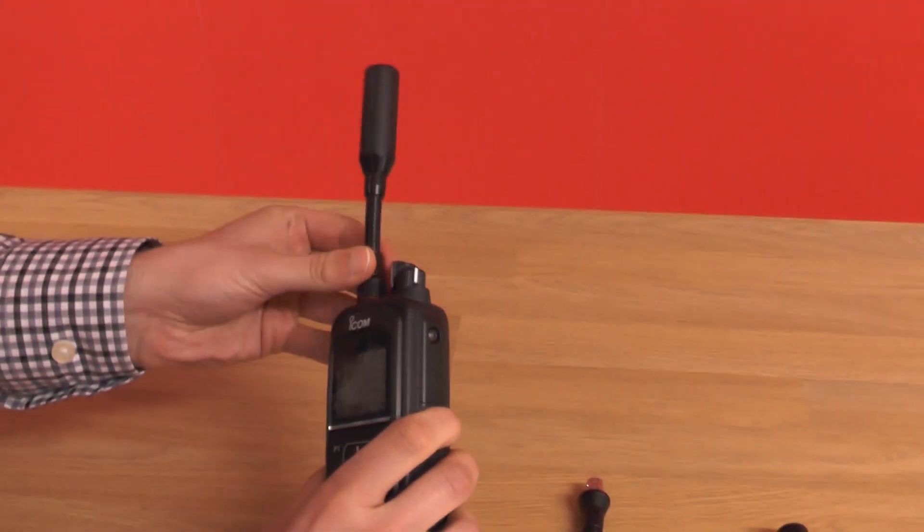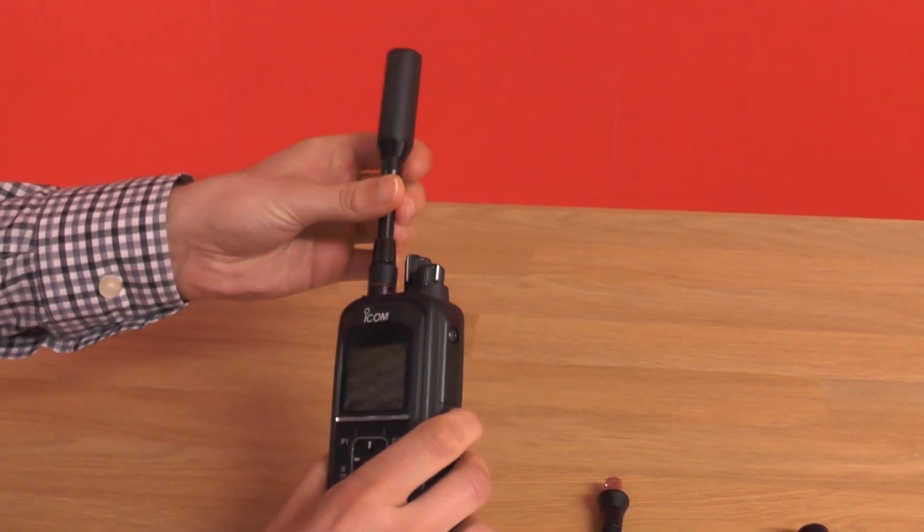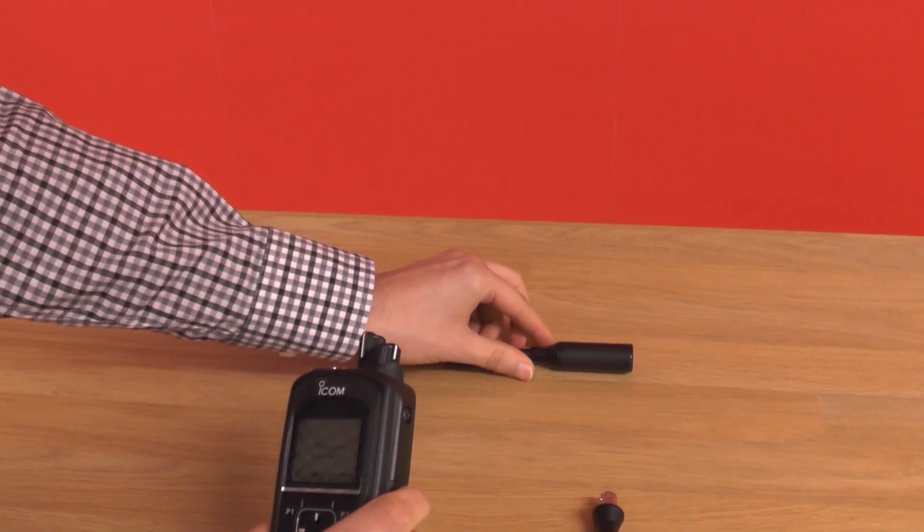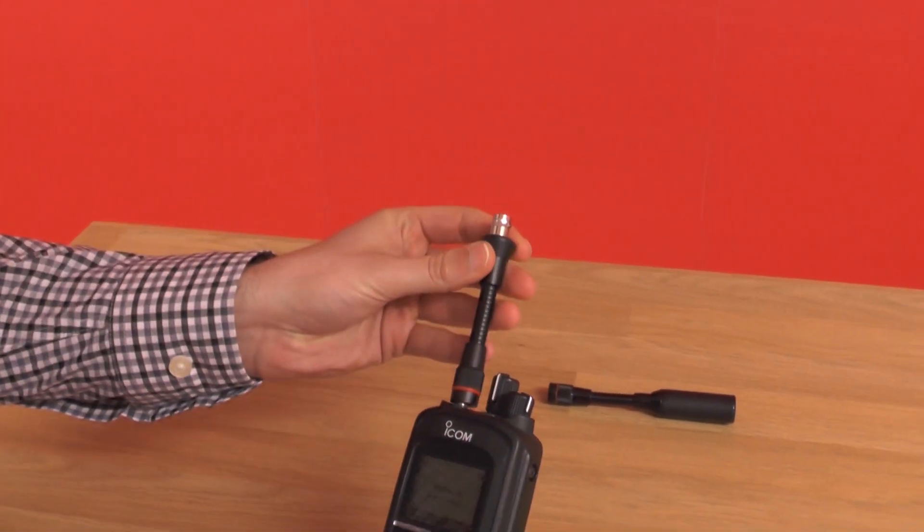So you remove the standard antenna by turning it and you attach the new antenna kit on to there.